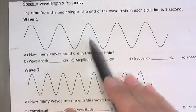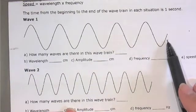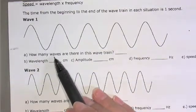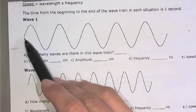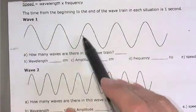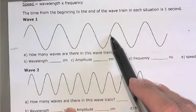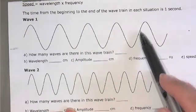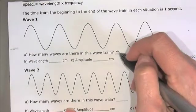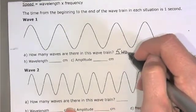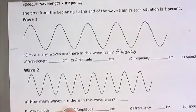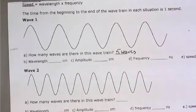All these waves were generated in 1 second. So the first question is: how many waves are there in this wave train? Let's count: 1, 2, 3, 4, 5. It's very important to note that you can have half waves, quarter waves, whatever — but we have 5 whole waves.